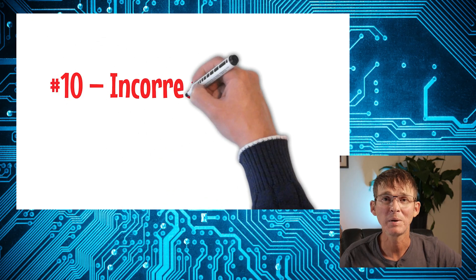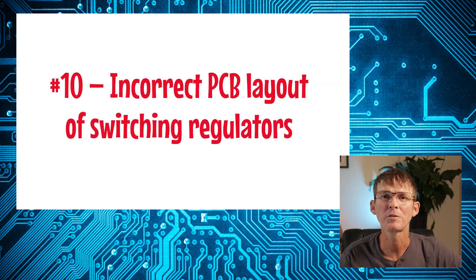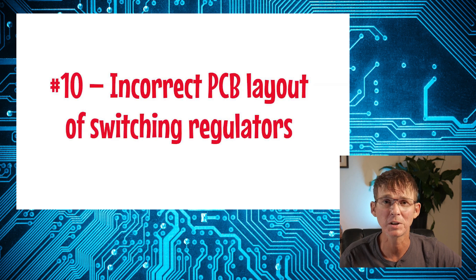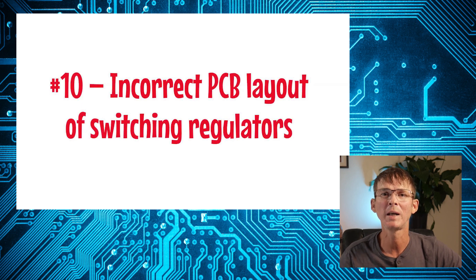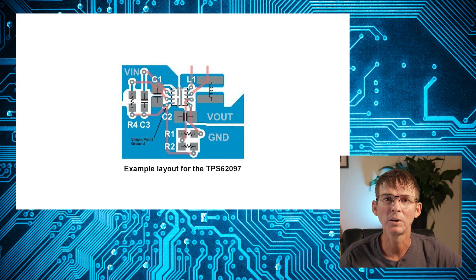Finally, the number 10 most common design mistake is incorrect PCB layout of switching regulators. A switching regulator converts one supply voltage to another by temporarily storing energy and then releasing it to the output in a controlled fashion, using inductors and capacitors as storage elements. Compared to a simple linear regulator, switching regulators are extremely efficient and waste very little power, but they are much more complicated to use correctly. One of the biggest complexities is correctly designing their PCB layout — you can't just randomly place the components. There are very strict layout rules to follow, but fortunately nearly all switching regulator data sheets include a section showing the proper layout with an example of how to do it correctly.